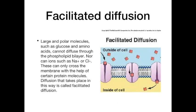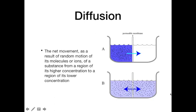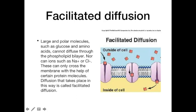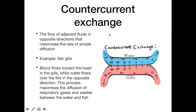Facilitated diffusion is when diffusion is facilitated by specific carriers. For example, if sodium ions cannot pass through a plain membrane but you add sodium channel proteins, the membrane becomes permeable to sodium, and sodium will use those specific channels to pass through. The diffusion is being facilitated by specific carrier or channel proteins.